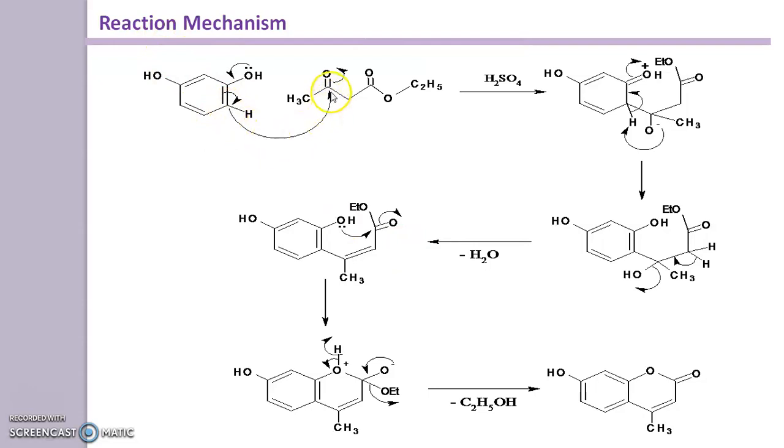So here, first of all, to this ortho position there is an attack of this ethyl acetoacetate due to this carbon having less electron density because this oxygen having more electronegativity pulls the electron towards it, therefore this carbon has a positive charge whereas this ortho position has an electron-rich cloud.